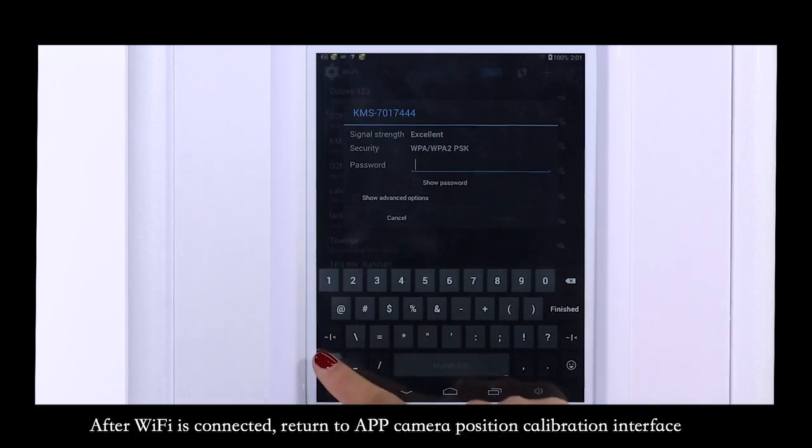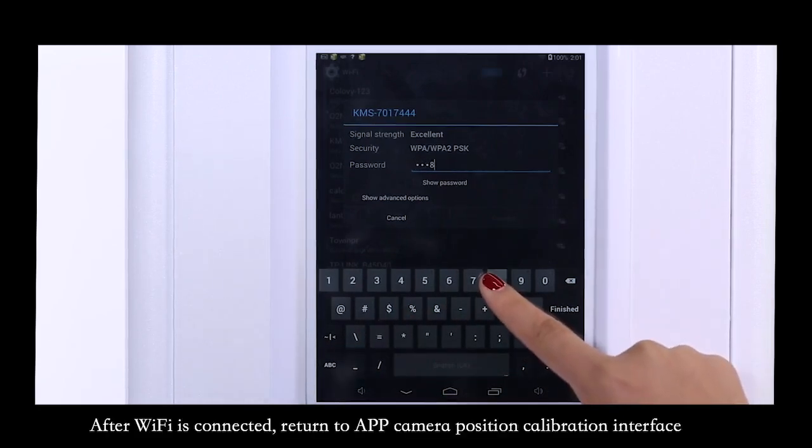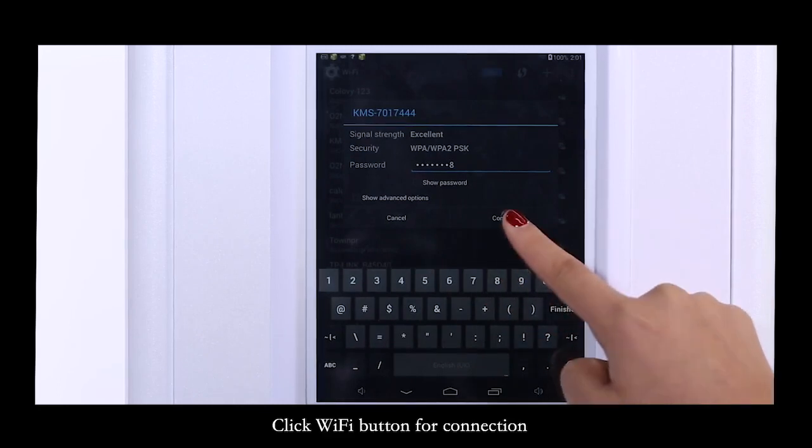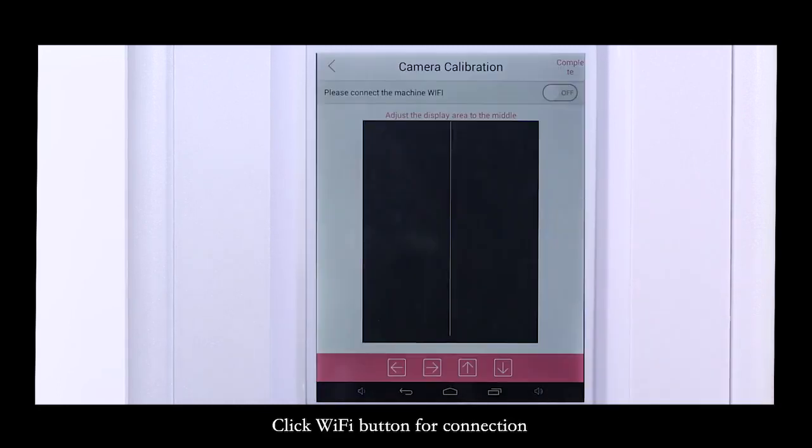After Wi-Fi is connected, return to the app camera position calibration interface. Click the Wi-Fi button for connection.